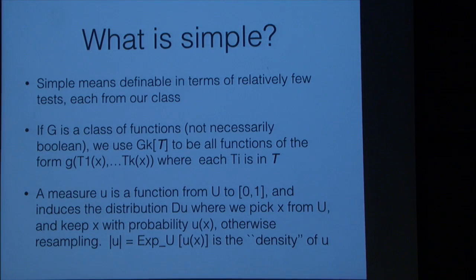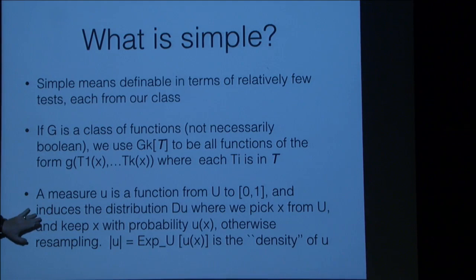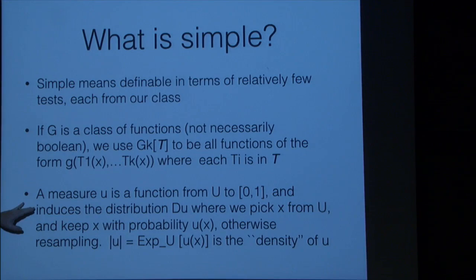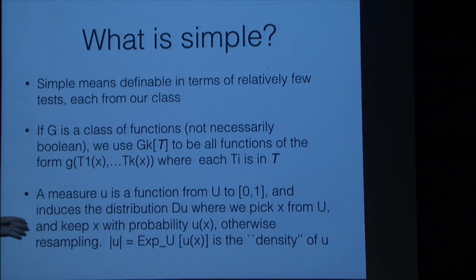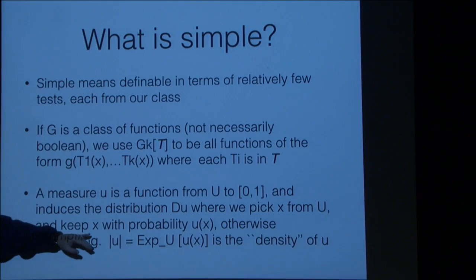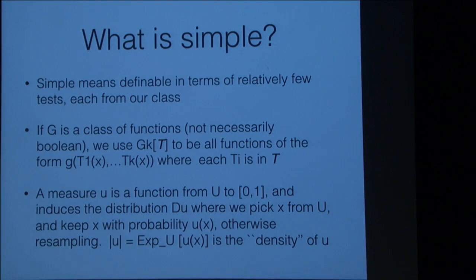We're going to look at our distribution as giving us a weight that we sample with respect to. Our model will be presented in the format of a measure — a function from the universe to the range zero to one. Zero meaning don't use this element at all, one meaning definitely use it, and somewhere in between meaning use it with that probability. The measure induces a distribution where we use it to do rejection sampling: we pick x at random from the uniform distribution, keep it with this probability, otherwise re-sample. The efficiency of this sampling procedure depends on the expected value of the measure, which we call the density.